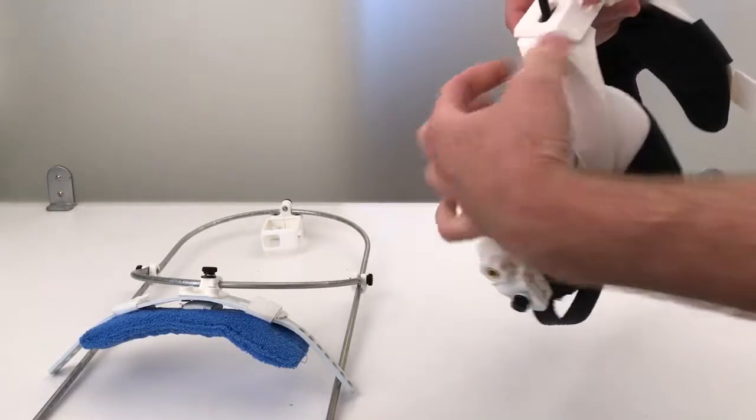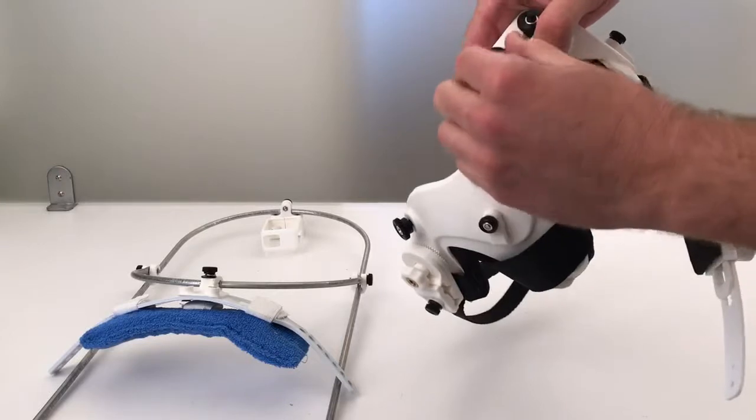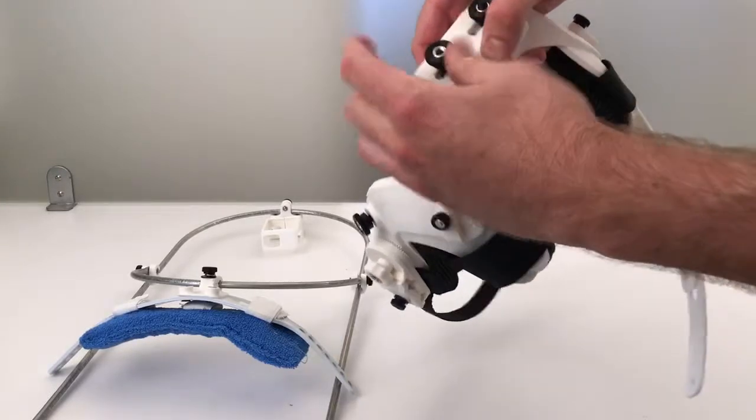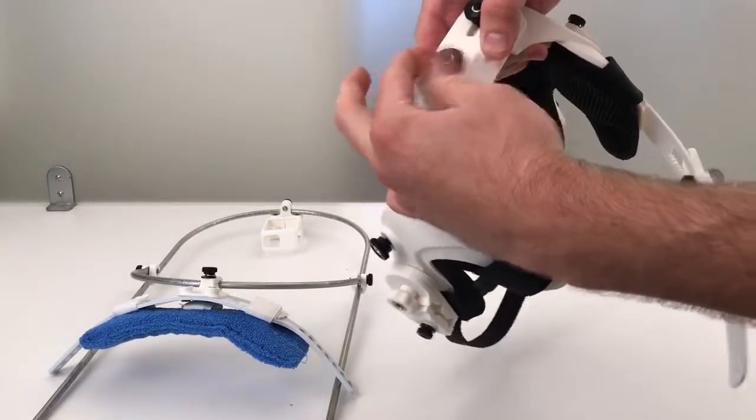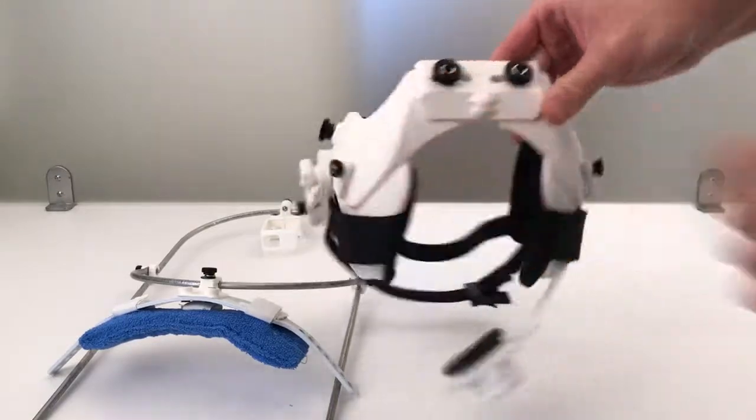And then again, I'm going to sort of pinch it together and hold it, show the same number of teeth here, and then tighten this knob back down. So now you have your helmet structure here.